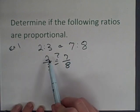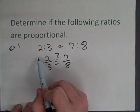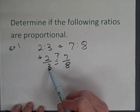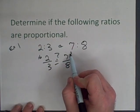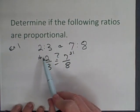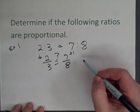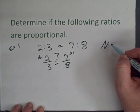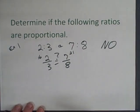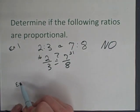You can also find the cross products. Two times eight would be 16. Seven times three would be 21. And since 16 does not equal 21 then these ratios are not proportional. Let's look at another example.